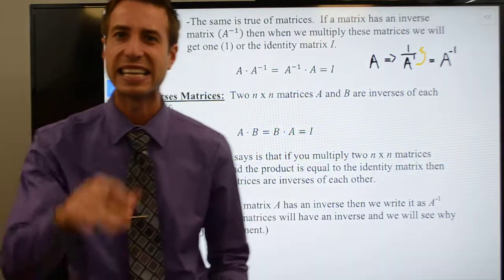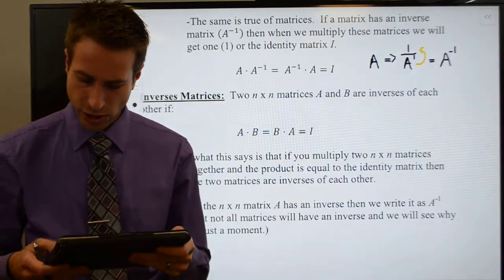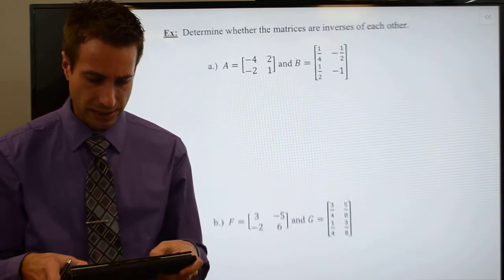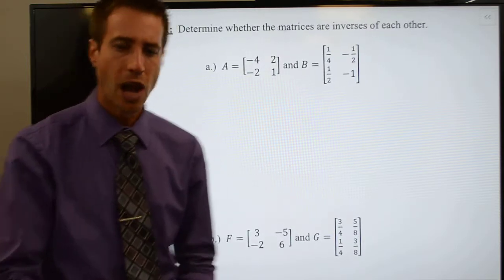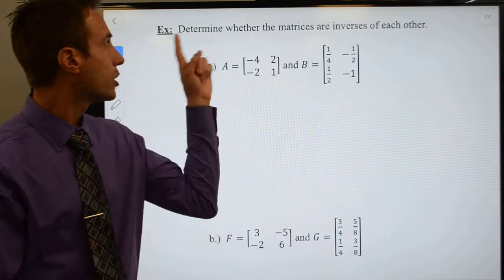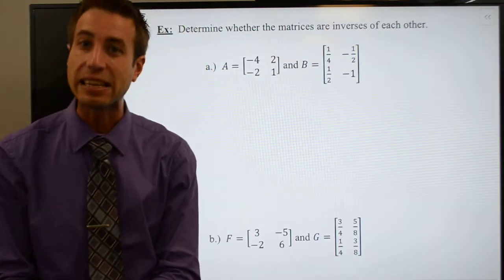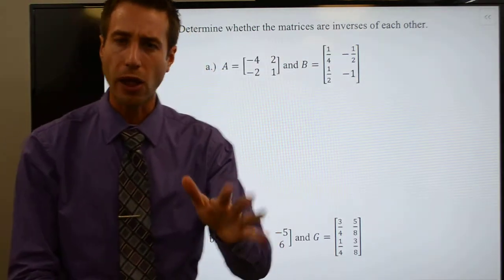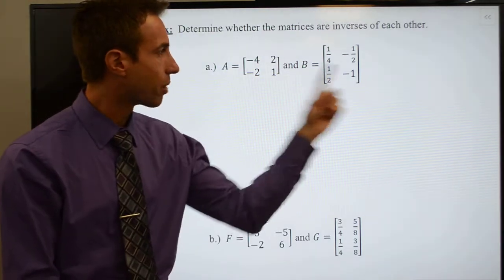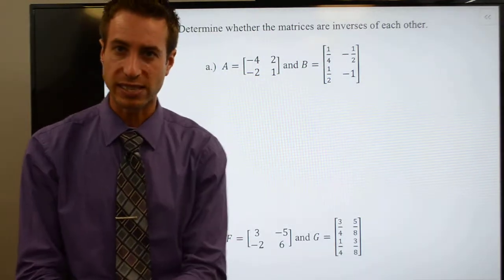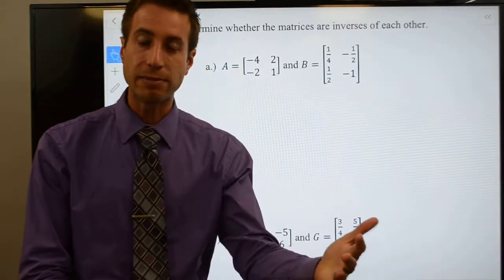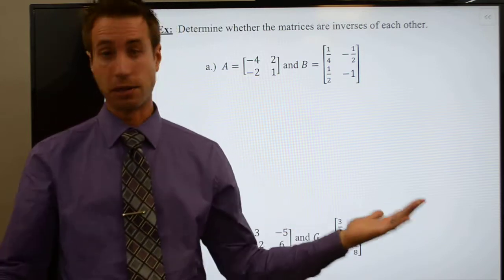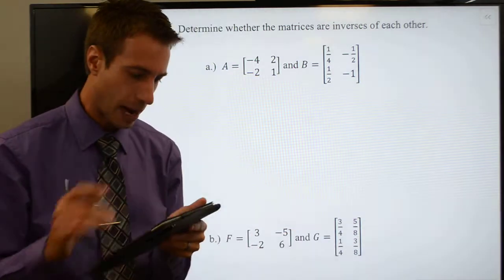That's what we want to look at in the next couple of example prompts. Here's what I'd like you to do: determine whether the matrices are inverses of each other. Well, this is really easy to do — all I have to do is multiply the matrices together. If I multiply them together and get the identity matrix, then they're inverses. So let's see what happens.